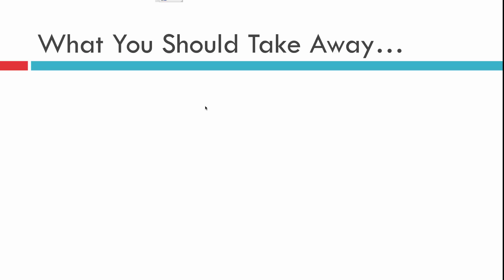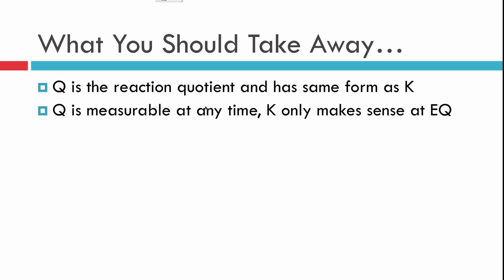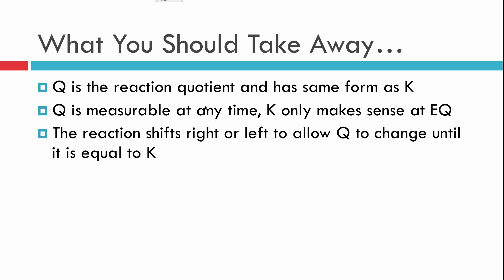So here's what you should take away from this short video. First off, Q is called the reaction quotient. And to calculate it, it has the exact same form as the equilibrium constant. It's measurable at any time, this value of Q, but the equilibrium constant only makes sense to discuss when we're at equilibrium. The reaction will shift either right or left to allow Q to change until it's equal to the equilibrium constant.